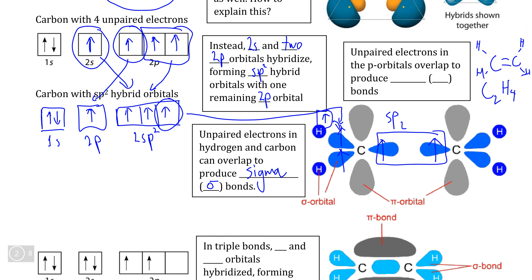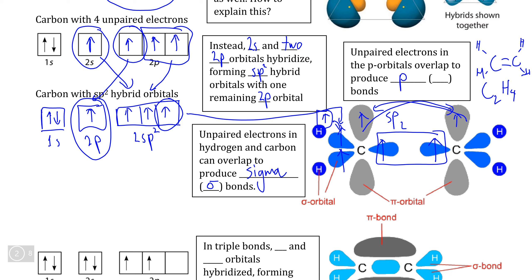The double bond is formed differently because it relies on the unpaired electrons that occur in the unhybridized p orbital. What happens is that these unhybridized p orbitals fold over and overlap with each other, allowing their unpaired electrons to pair together. Because these two orbitals are unhybridized, these are not sigma bonds and are instead what we call pi bonds, represented by the Greek letter pi.